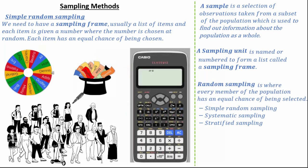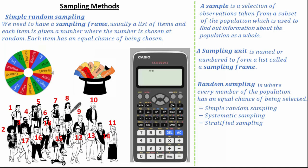My favourite method is to give each member of the population a number — for example, 1 to however many people there are in the population — then use a calculator or number generator to randomly select our sample. If a number repeats, we simply ignore it and select the next random number.